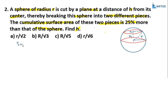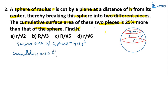The surface area of the sphere is 4πr². When one plane cuts the sphere into two pieces, two new circular faces are formed. The total surface area of the two pieces is 25% more than the original sphere's surface area.